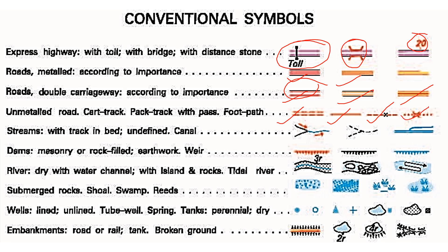Now we are coming to streams — that is the small strip. Here 'undefined' means it gets dried up, and then this is a canal. There are some kinds of canals in your topo sheet. Then depths — masonry, or you can say this is masonry or rock-filled. It's made by either bricks or a mason has made it. The other one is filled with earthwork — that may be pebbles, boulders, mud, rocks, and soil.